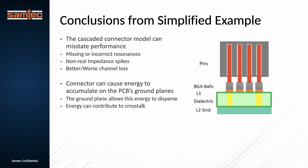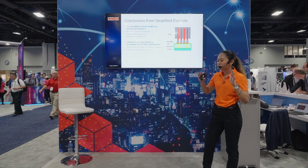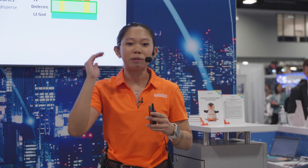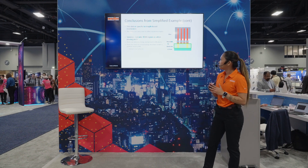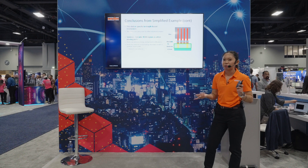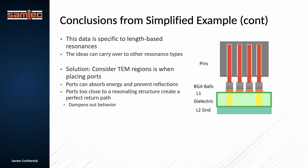In conclusion, cascaded connector models can misrepresent performance. We saw resonances in the end-to-end model that were absent in the cascaded model. We could also see non-real impedance spikes and either better or worse channel performance. Connectors can cause energy to accumulate on PCB ground planes, so it's important to include the PCB interaction between the connector and the PCB. The resonance in question is length-based, but the concept carries over to other types of resonances. The solution is to consider where your TEM region is and ensure it's well-defined. Ports can absorb energy and prevent reflection — ports too close to a resonating structure, such as anti-pads, voids, or a cluster of vias, can be problematic. Make sure your port is placed as far away as possible.